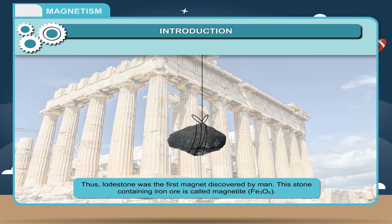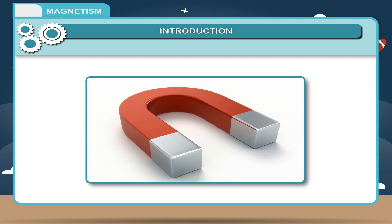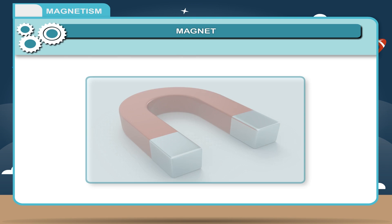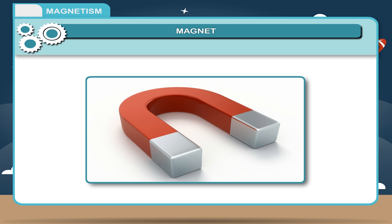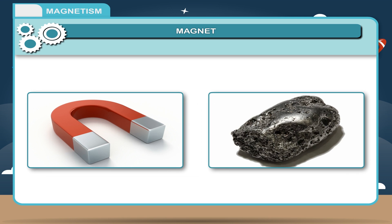This stone containing iron ore is called magnetite FE304. Later on, artificial magnets were also made from pieces of iron. Magnet: A magnet is an object made of certain materials like iron, which can create a magnetic influence or effect.